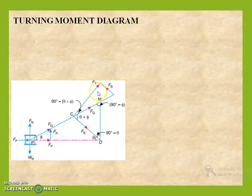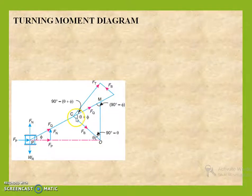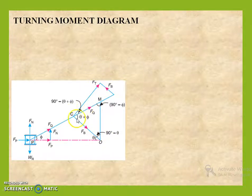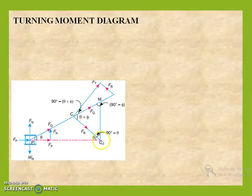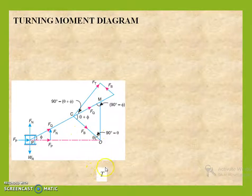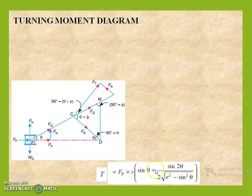The component Ft is causing the rotational movement — that is, the crank will be rotating in this direction. So what is the twisting moment acting at point O, or the torque acting at point O? That is equal to Ft into the perpendicular distance, that is the crank radius. After deriving it, the turning moment or the torque can be found out by the following equation.